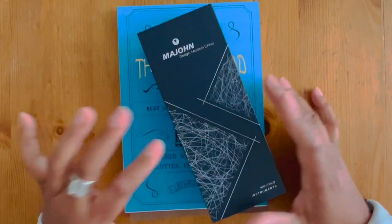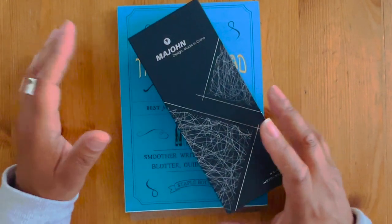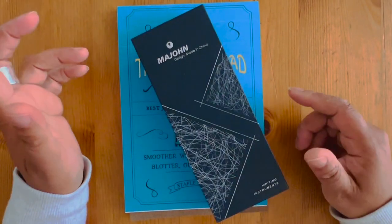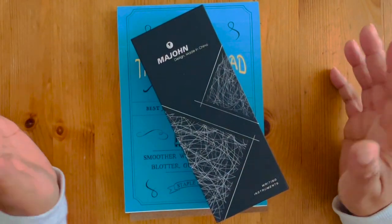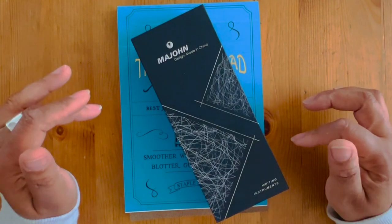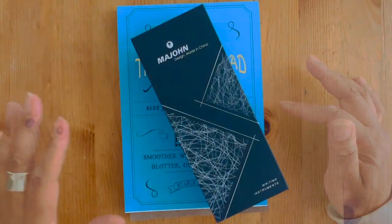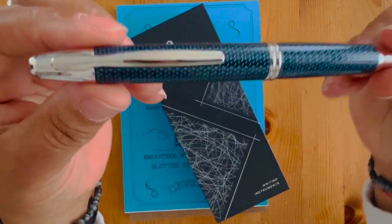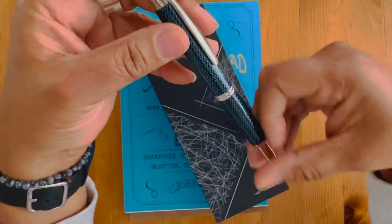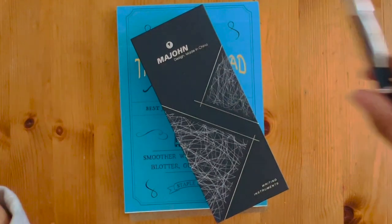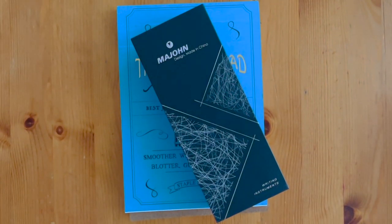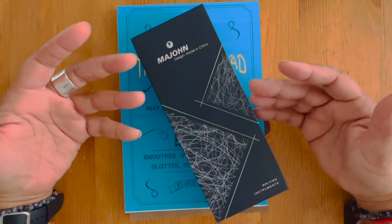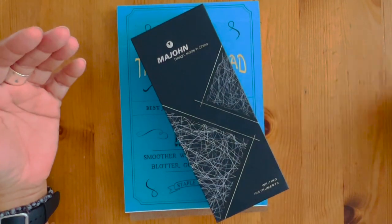I have purchased the Majohn A1, which is the knockoff version of the Pilot Vanishing Point pen. This is the Pilot Vanishing Point in blue carbonesque. Some people might ask, well why did you buy the Majohn if you already had a Pilot Vanishing Point?